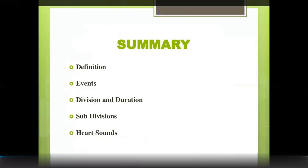In summary, the cardiac cycle consists of atrial systole, atrial diastole, ventricular systole, and ventricular diastole with their subdivisions. The four heart sounds are: first heart sound (closure of AV valves, beginning of ventricular systole), second heart sound (closure of semilunar valves, beginning of ventricular diastole), third heart sound (rapid filling), and fourth heart sound (atrial kick). The first and second heart sounds are the most clinically important.